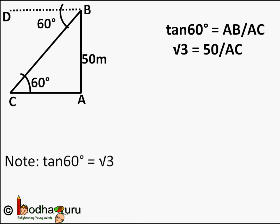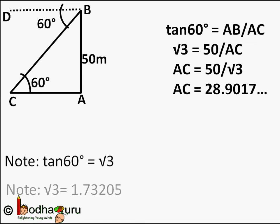So AC equals 50 by square root of 3. We know the approximate value of square root of 3, considering two decimal places, it is 1.73. So AC equals 50 by 1.73.